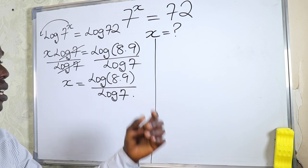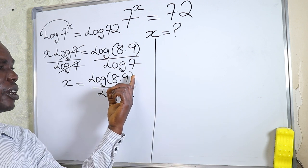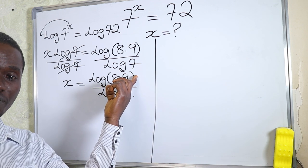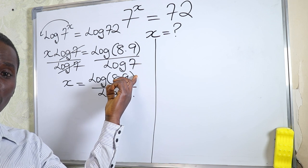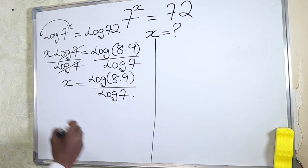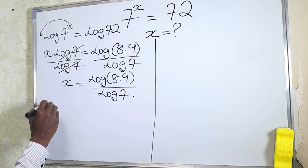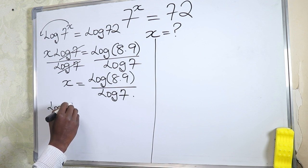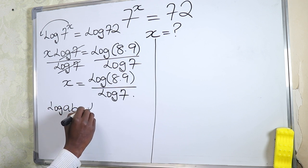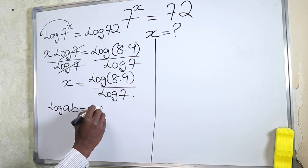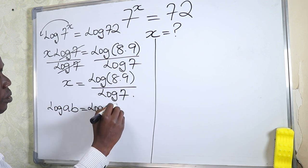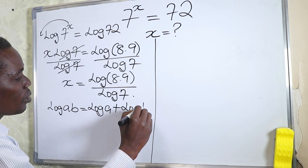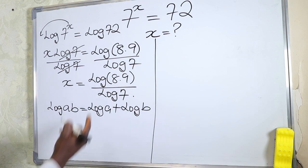Now remember the multiplication law of logarithm. Following the multiplication law of logarithm, we have log of ab. Log of ab equals log of a plus log of b.